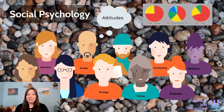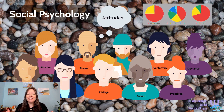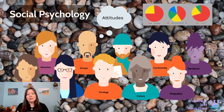Welcome to Intro Psychology Unit 12. In this unit, we're discussing social psychology, which really makes up an interesting gap in the psychology field. It falls between other fields like sociology, but also includes lots of elements of cognitive psychology.